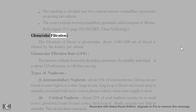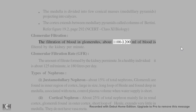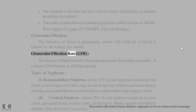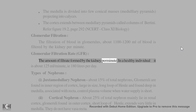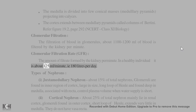Glomerular filtration: the filtration of blood in the glomerulus. About 1100–1200 ml of blood is filtered by the kidney per minute. Glomerular Filtration Rate (GFR) is the amount of filtrate formed by the kidney per minute. In a healthy individual it is about 125 ml/minute, i.e., 180 liters per day.